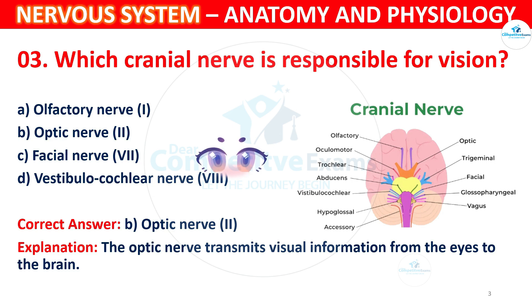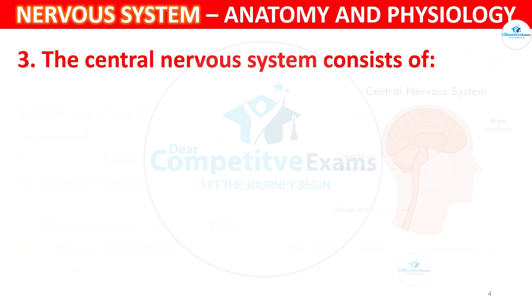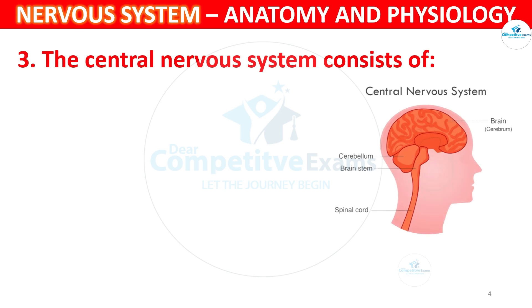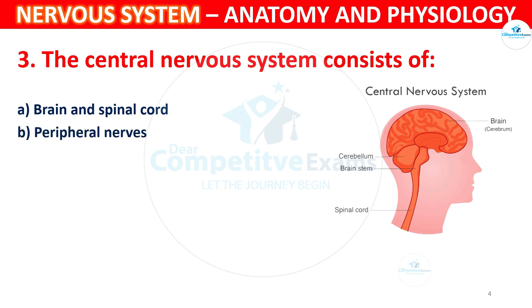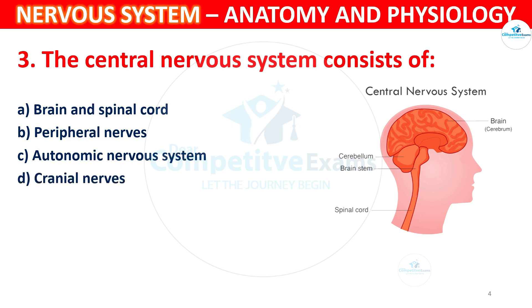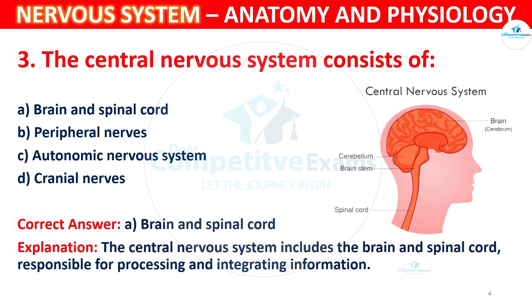Question 4: The central nervous system consists of which components? Options: A) Brain and spinal cord, B) Peripheral nervous system, C) Autonomic nervous system, D) Cranial nerves. The correct answer is A, Brain and spinal cord. The central nervous system includes the brain and spinal cord, responsible for processing and integrating information.